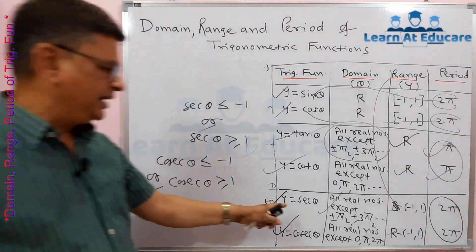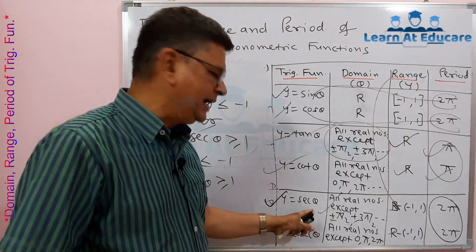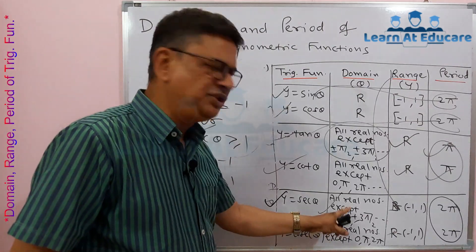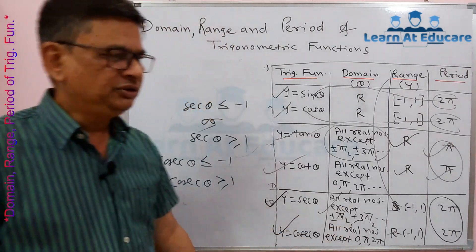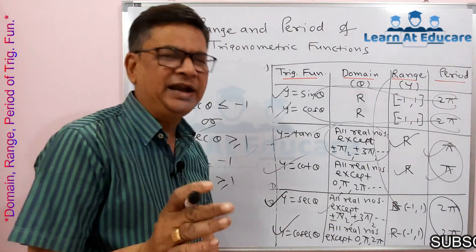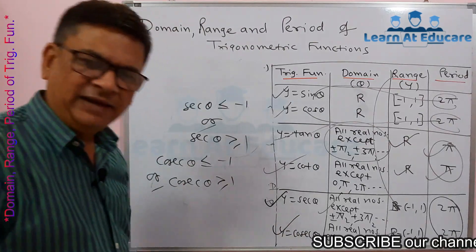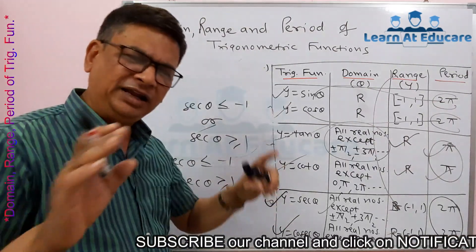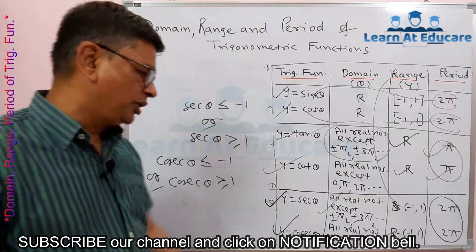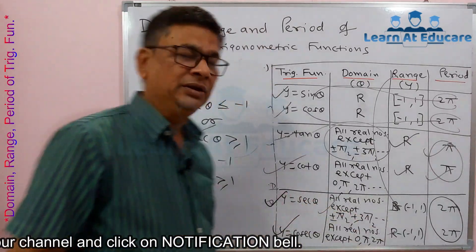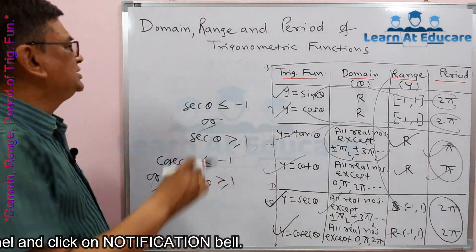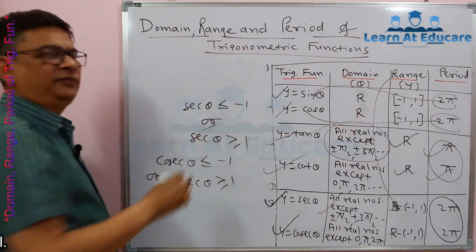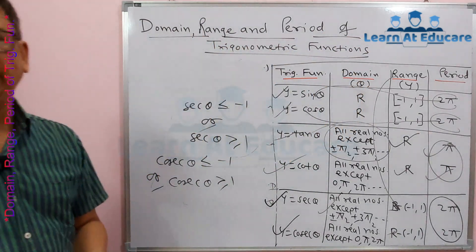Regarding domain: for sec θ, θ can take any value except odd multiples of π/2 — that is, 90°, 270°, and so on. For cosec θ, it can be defined for every real number angle except 0, π, and 2π. That covers the domain, range, and period of all six trigonometric functions.